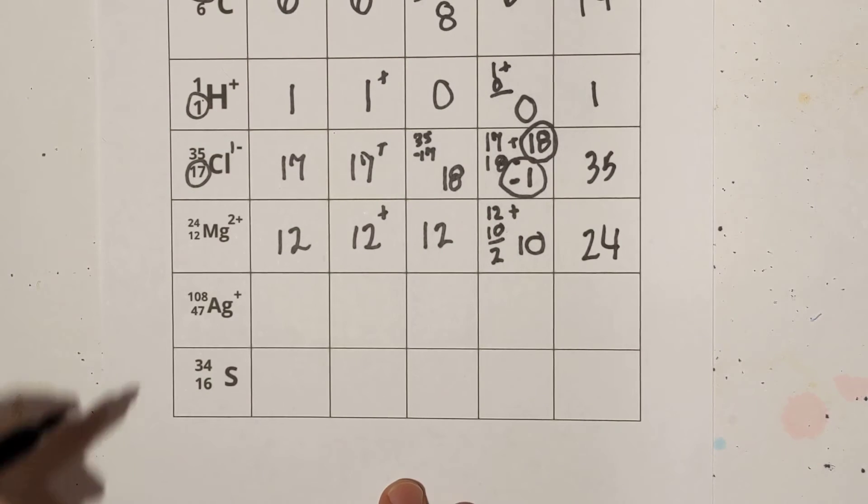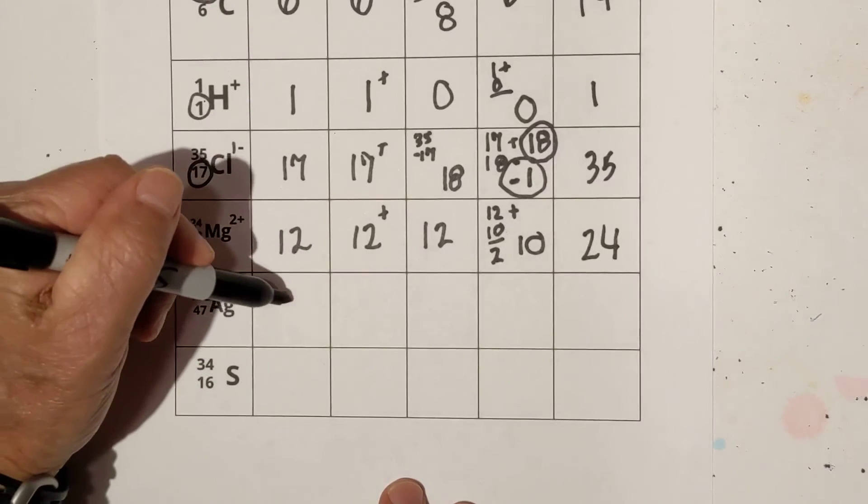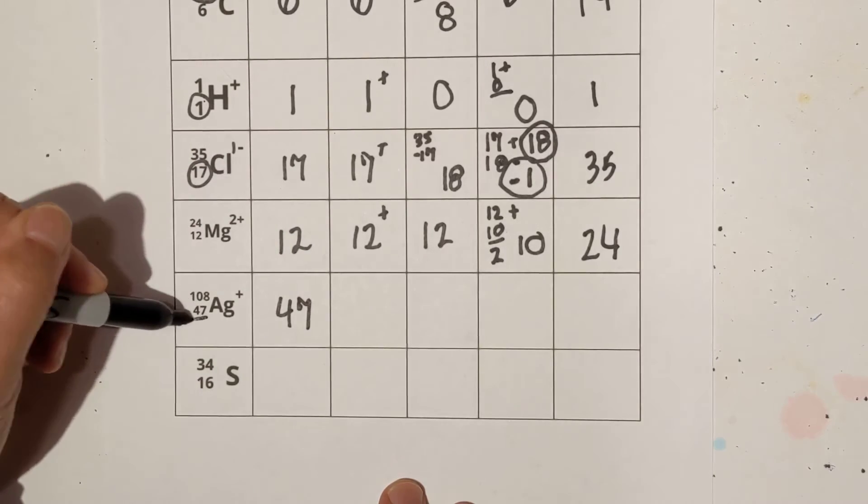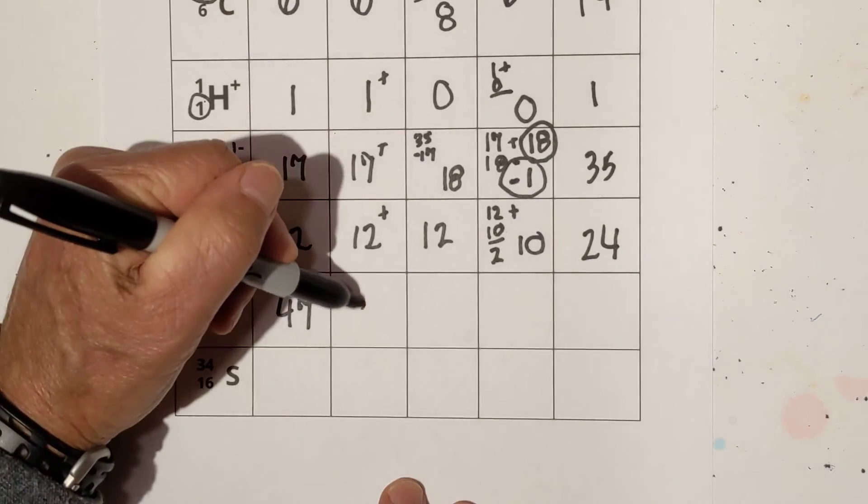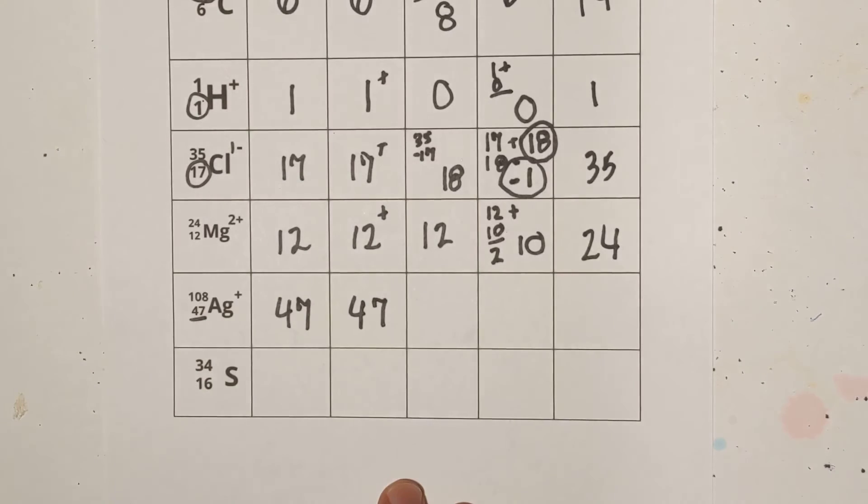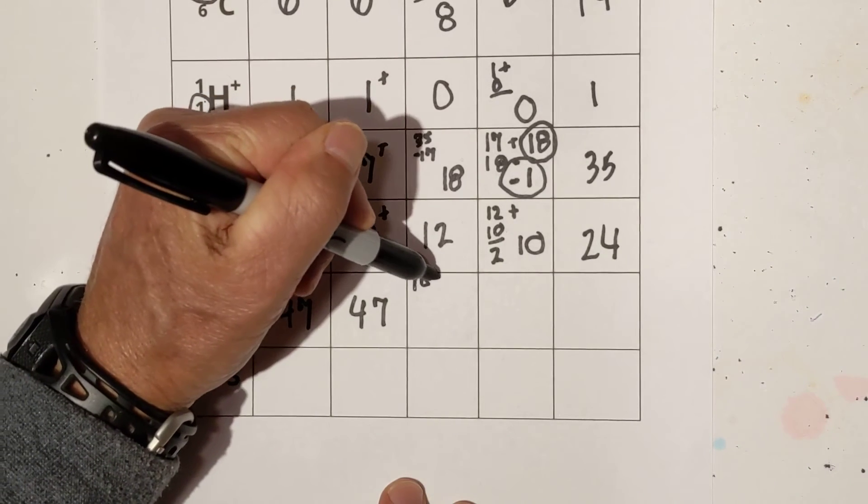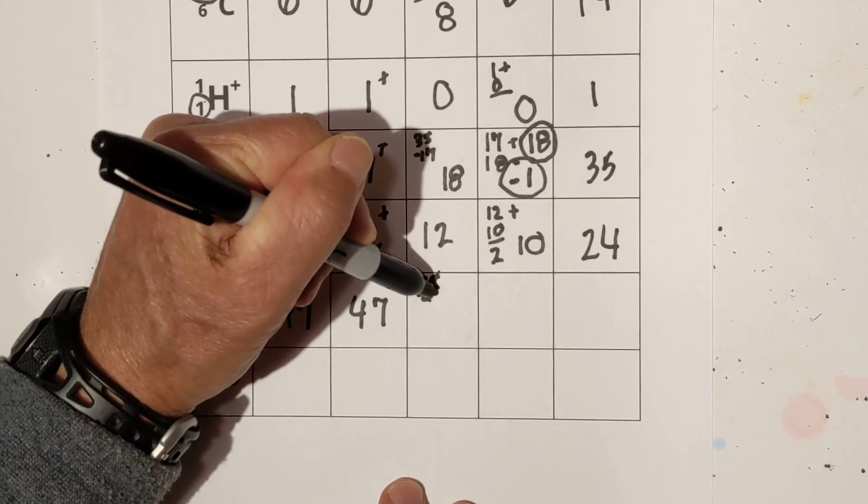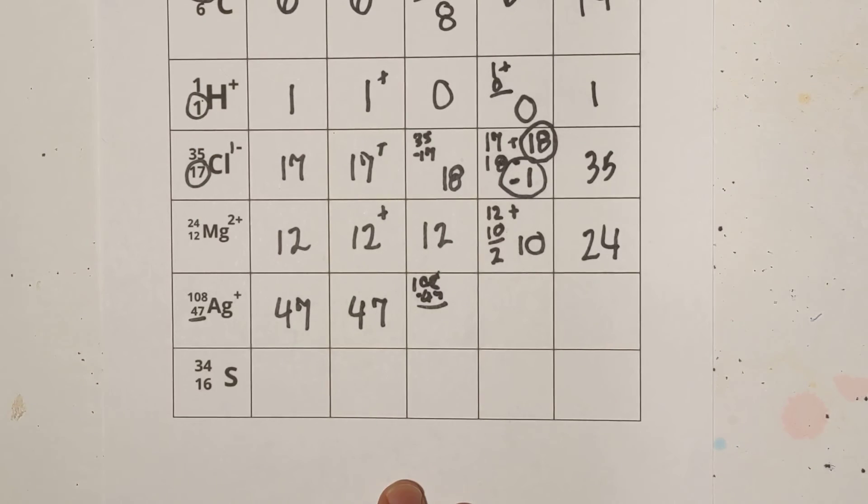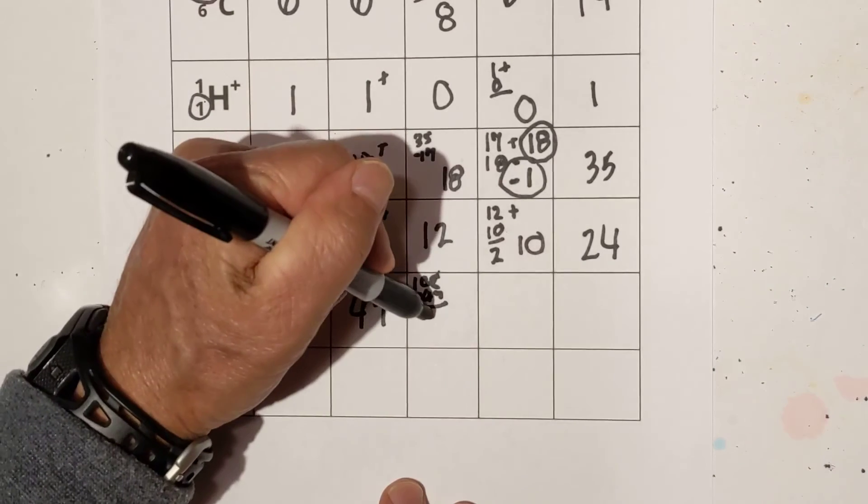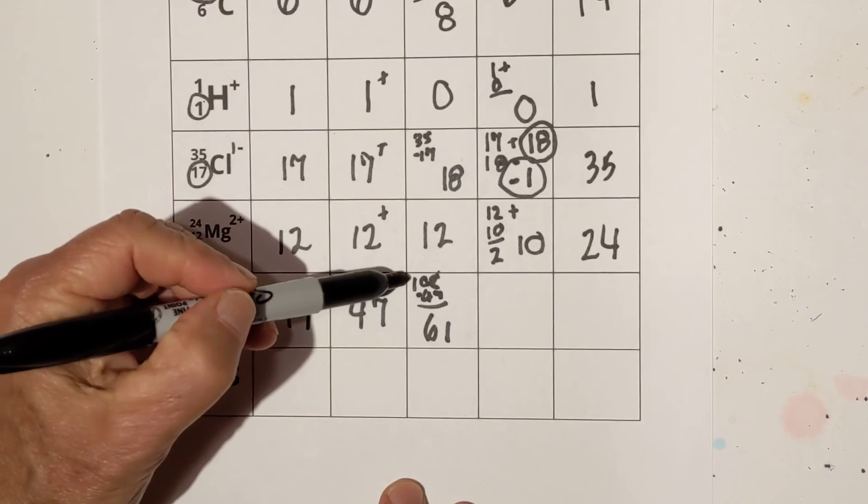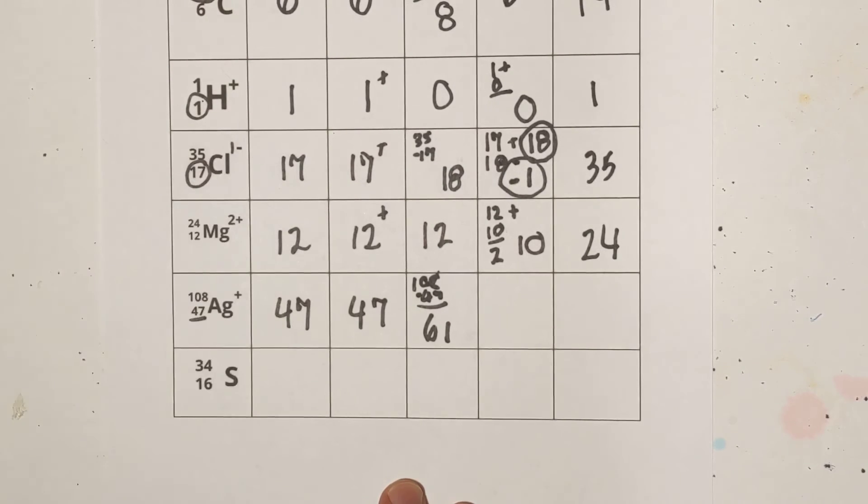Okay, next we have, again, atomic number is the number right here. Number of protons equals the atomic number. Number of neutrons will be 108 minus 47. Woo, you can't see that. That is messy, and that equals 61. This chicken scratch here is 108 minus 47.